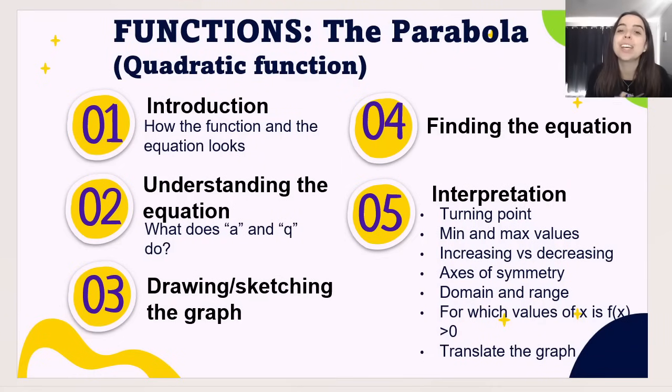The important stuff that we're going to look at when it comes to the parabola: we basically did the introduction right now, like how the function and equation looks. I'm quickly going to show you what a and q does in this video. Then in the next video, we're going to focus on drawing or sketching the graph. So I give you an equation, you give me the graph. Then we're going to look at finding the equation. So I give you a graph, and you work backwards to give me the equation. And in your exam, they're going to ask you to interpret the graph. You need to be able to tell me about turning points, minimum and maximum values, increasing and decreasing, domain and range, the axes of symmetry, and how to translate the graph. Let's look at understanding the equation, which is vital. If you don't understand the equation, you're not going to be able to draw it or find the equation.